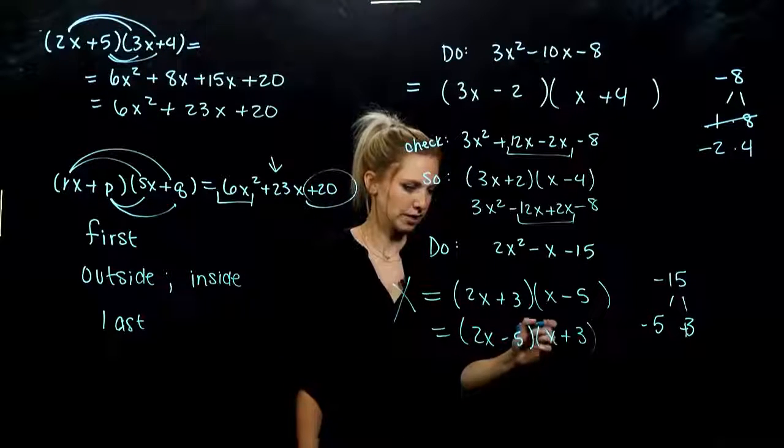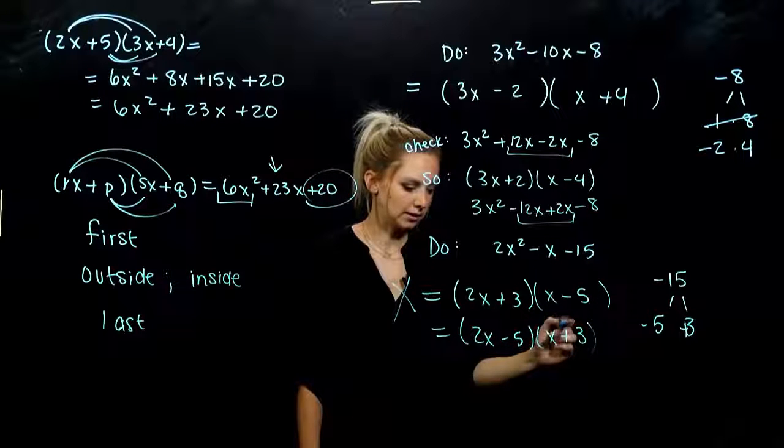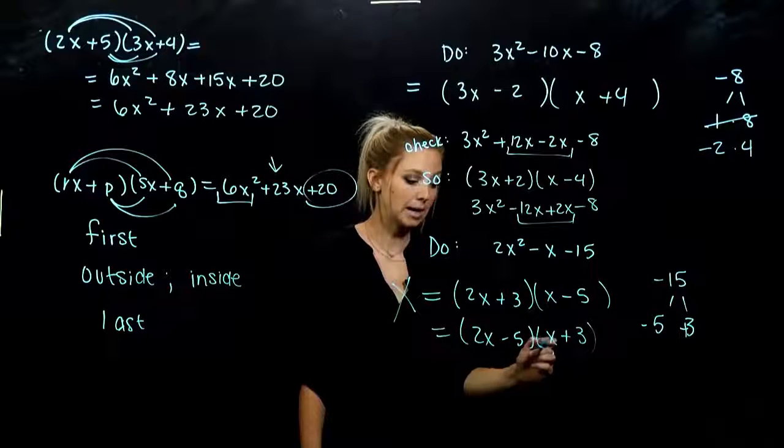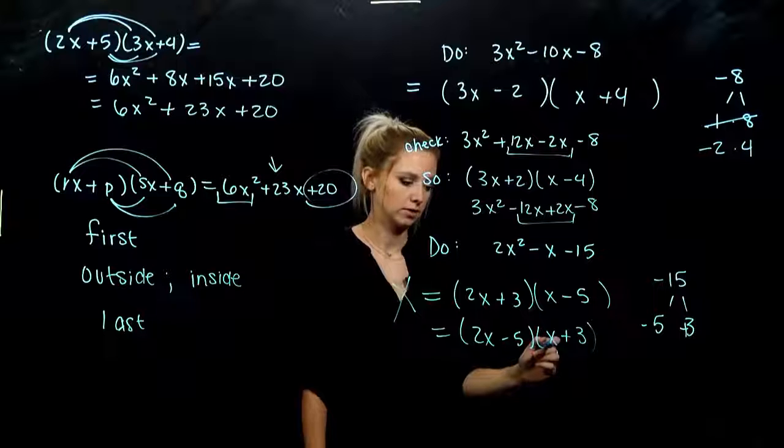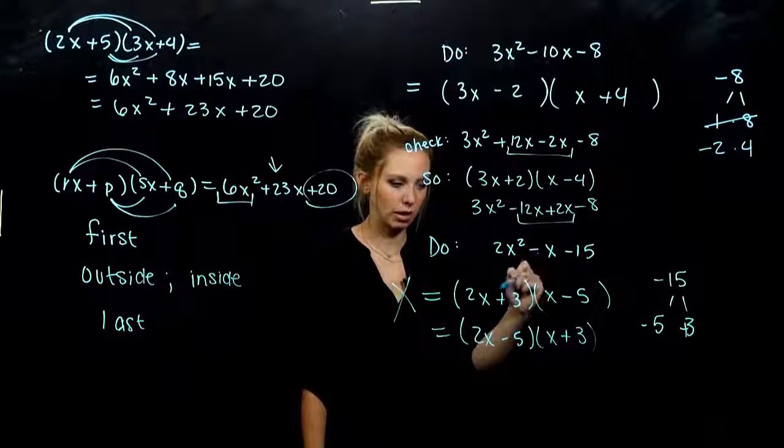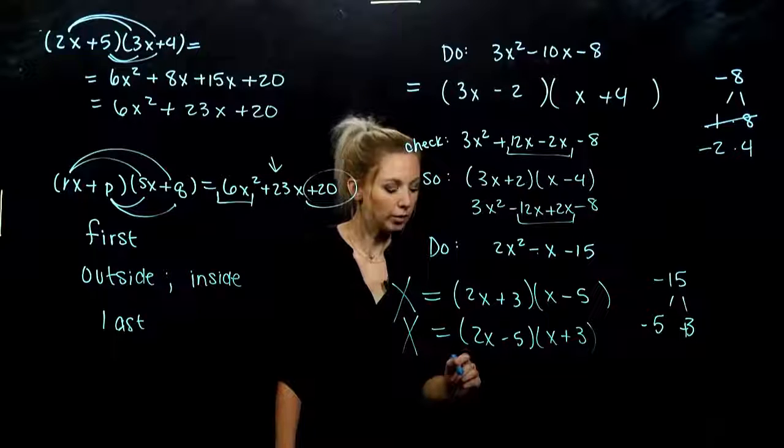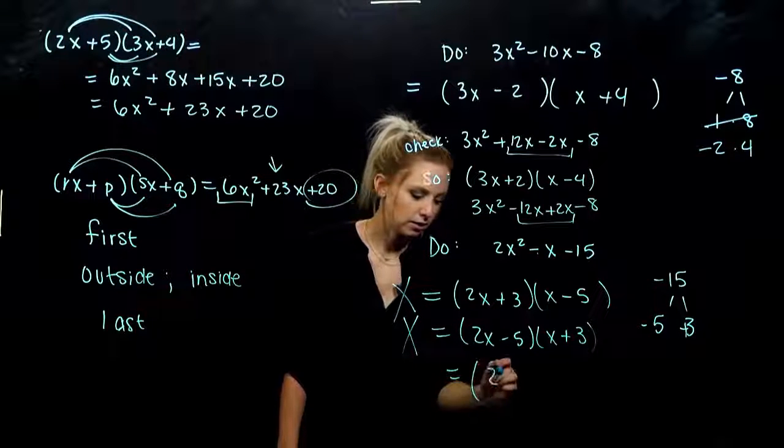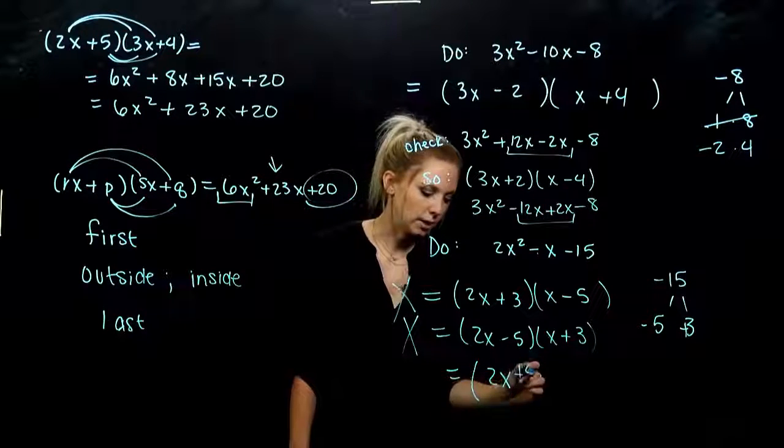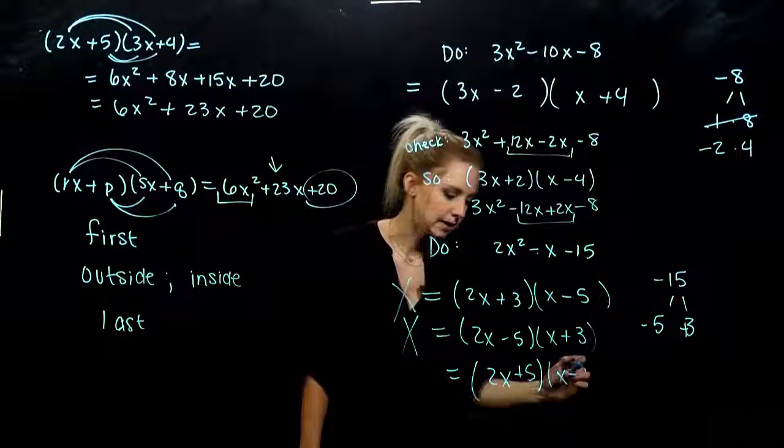So first, 2x squared plus 6x minus 5x. So this one will give me a positive 1, but I need it to be negative. So that one's pretty darn close, but what do we need? We need to switch the signs around and have positive 5, negative 3.